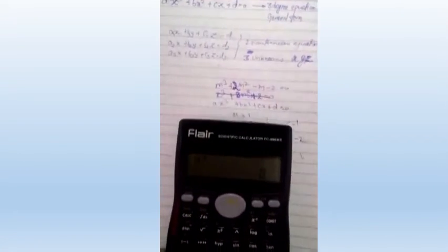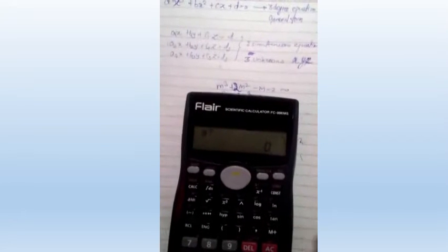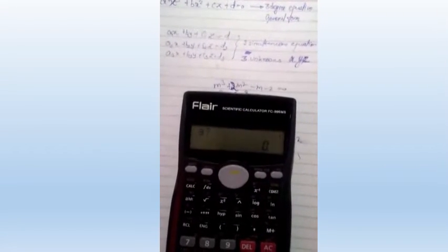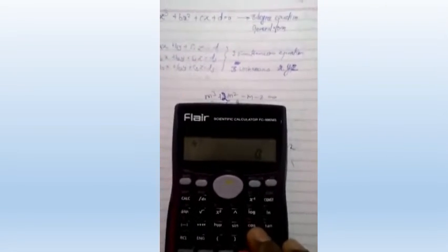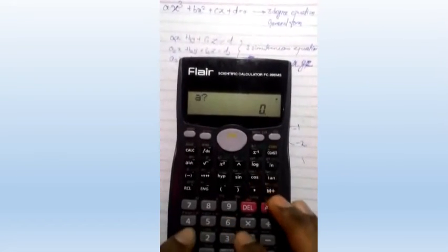Let us take an example like this: m³ + 2m² - m - 2. Comparing it with the general equation given over here, we get a = 1, b = 2, c = -1, and d = -2. So we'll put these coefficients over here. A is 1.